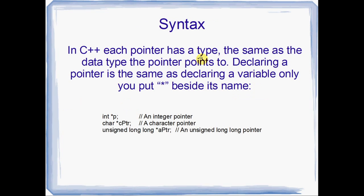In C++, pointers have a type — the same as the data type we intend to point them to — and declaring a pointer is exactly the same as declaring a variable, only we put the star or asterisk beside its name. So int star p declares an integer pointer, a pointer we're going to use to point to integer variables. Or char star cptr — cptr is the name of the pointer and it will point to characters. Or unsigned long long star aptr declares an unsigned long long pointer. You just put a star beside the name, and other than that it's the same as declaring a normal variable.